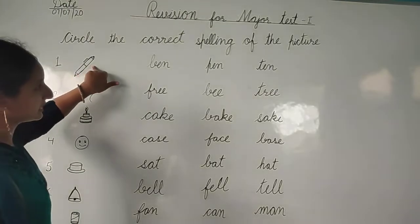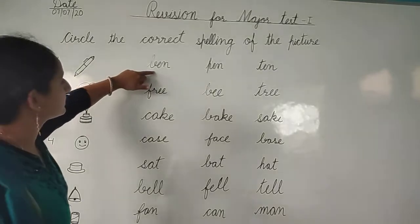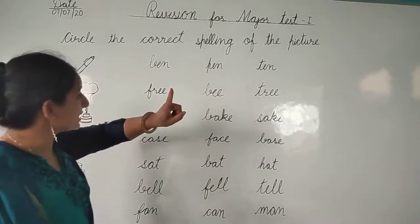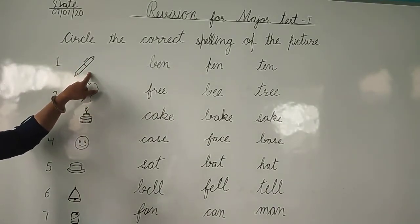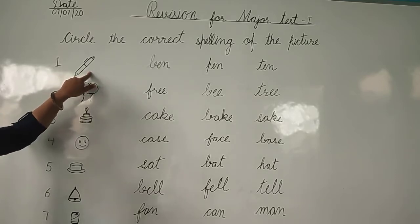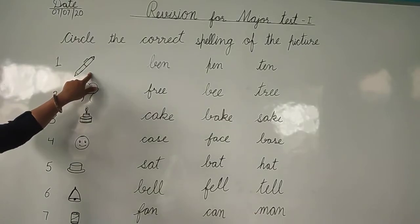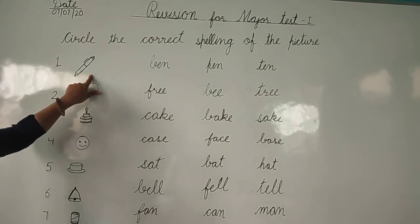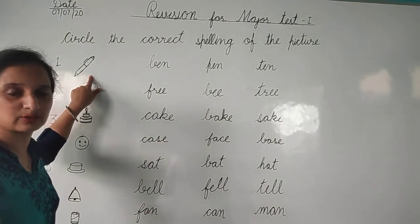Here are some pictures and in front of these pictures, three words are written. One is the spelling of the picture and two are wrong words. So you are to choose the correct spelling of the picture and do a circle on that spelling.